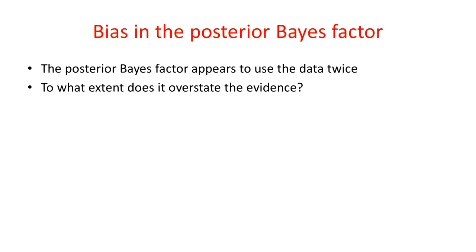There is still the issue of whether the posterior Bayes factor is somehow biased because it uses the data twice. Once to get the posterior distribution, then again to get the Bayes factor. The question nobody seems to have asked is this: if it uses the data twice, then to what extent does it overstate the evidence?